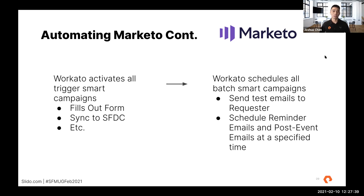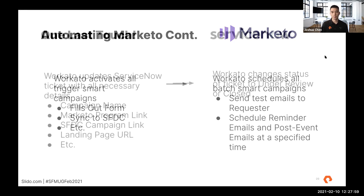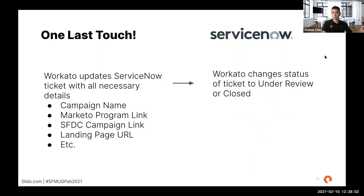Next, we schedule all the batch smart campaigns. First, we send test emails that were created to the requester, and then we schedule the reminder emails and post-event emails at a specific time based on the date and time of the event — all this can be automated. Then we close it out: Workato grabs the campaign name, the Marketo program link, Salesforce campaign link, and landing page URL, then updates it in the ticket with a preset message — making it seem like it's coming from a human — and updates the status to under review or closed.